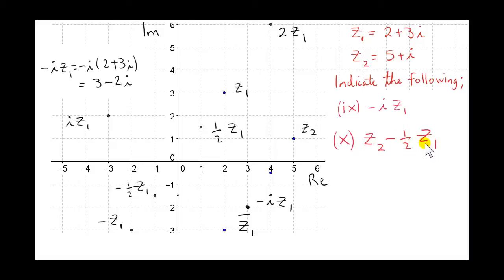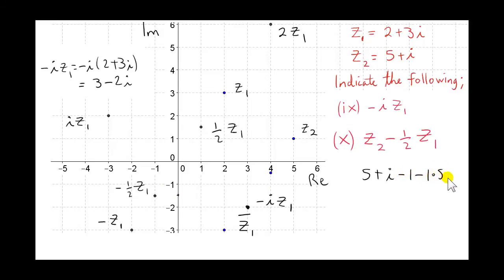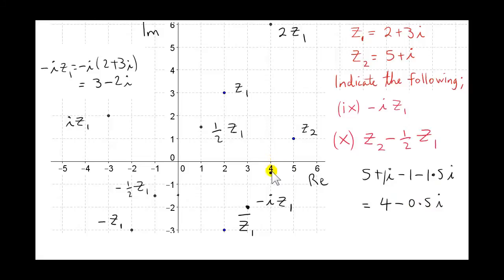Finally, let's consider z2 minus a half z1. z2 is 5 plus i, and minus a half z1 is minus 1 minus 1.5i. Adding the real parts: 5 minus 1 is 4. Adding the imaginary parts: 1 minus 1.5 is minus 0.5. So this new number has real part 4 and imaginary part minus 0.5.